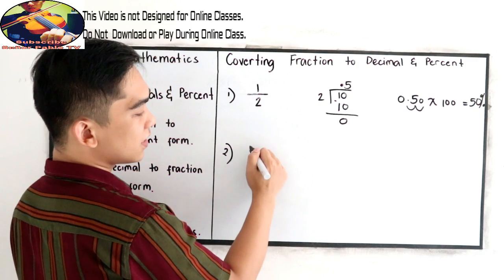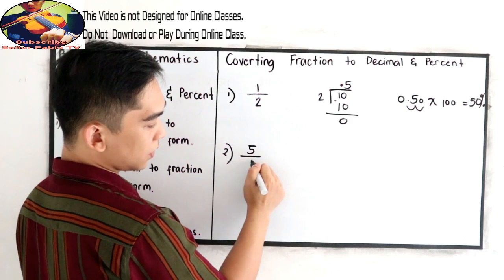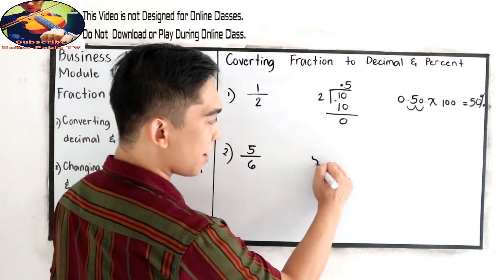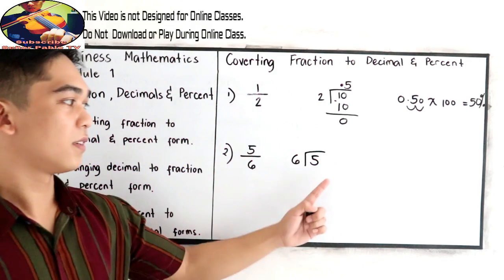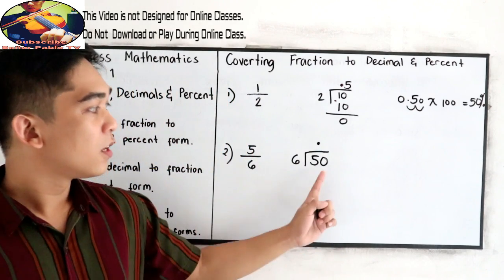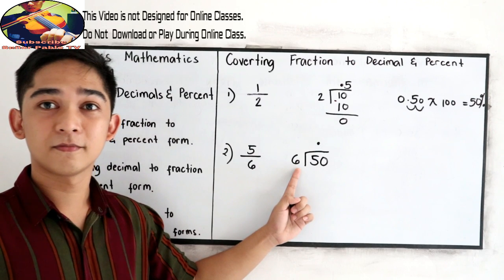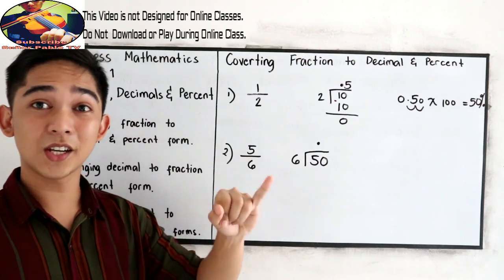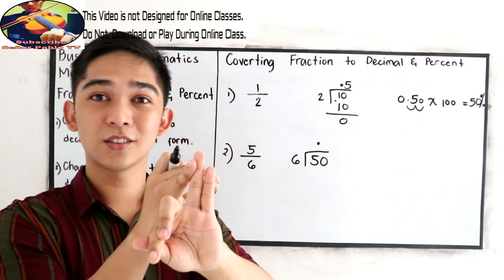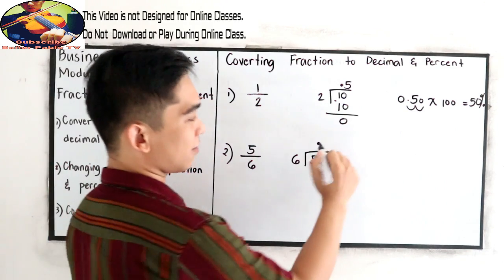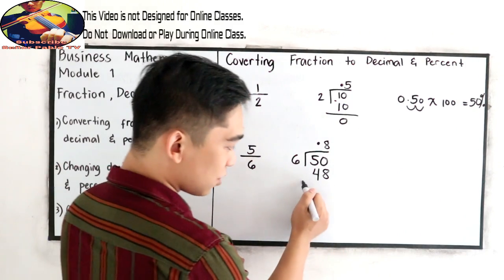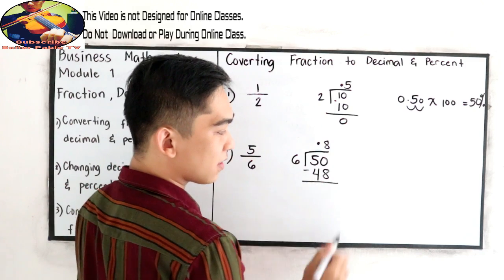Let's have another example. We have 5 over 6 — write into decimal and percent. So that is 5 divided by 6. It cannot be done directly, so we write the decimal point and put 0. So 50 divided by 6: counting multiples of 6 — 6, 12, 18, 24, 30, 36, 42, 48 — so we get 8. 8 times 6 is 48. We subtract: 50 minus 48 is 2.